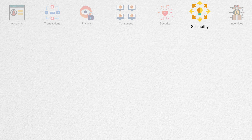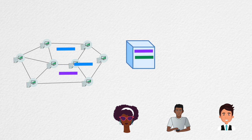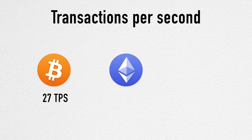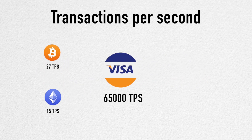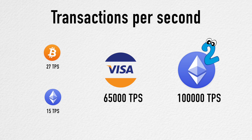Scalability is vital for mass adoption of any technology. By scalability, I mean the rate at which the network can process transactions, also known as transaction throughput. The most public blockchains right now are Bitcoin at 27 transactions per second and Ethereum at 15 transactions per second. For context, a centralized payment processor like Visa can process over 65,000 transactions per second. However, this is not a fundamental limitation of distributed ledgers — throughput varies significantly from one blockchain implementation to another. The next version of Ethereum, ETH 2.0, is expected to hit over 100,000 transactions per second, which will show that blockchains can operate at scale.